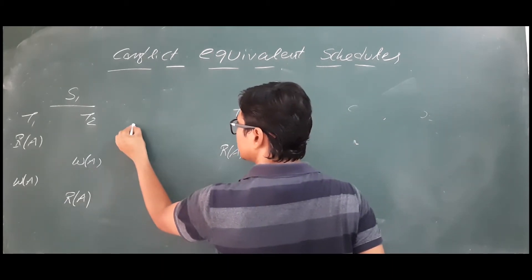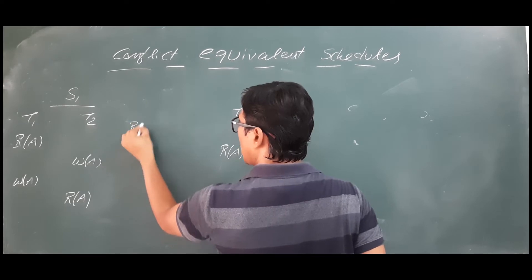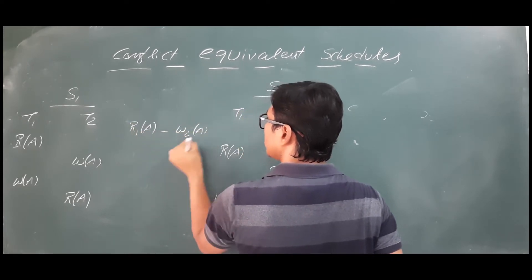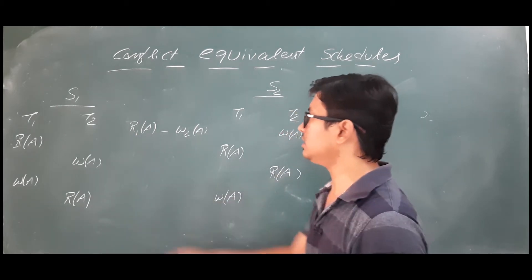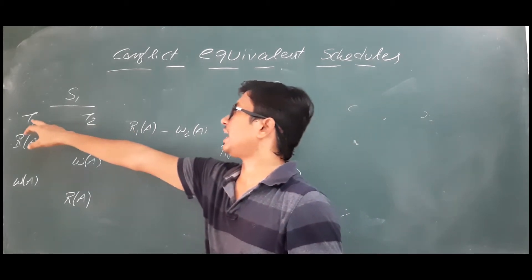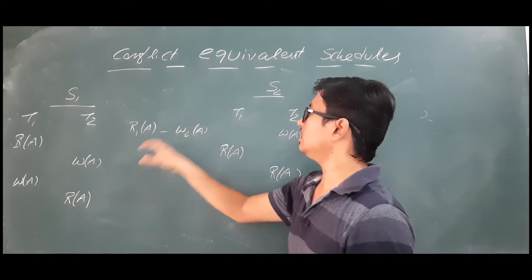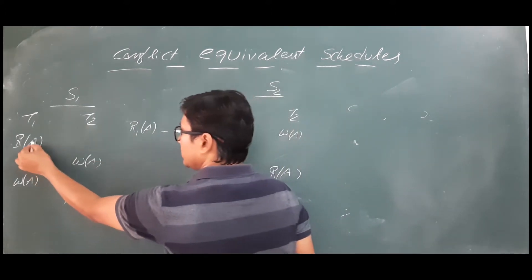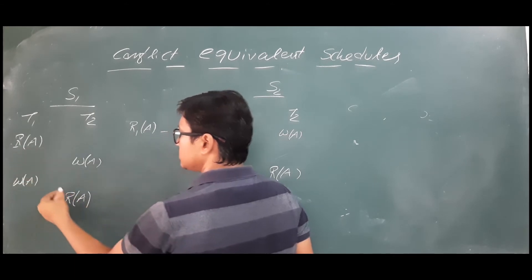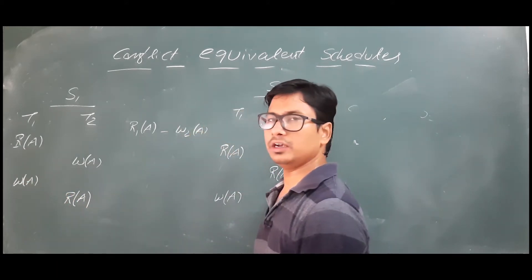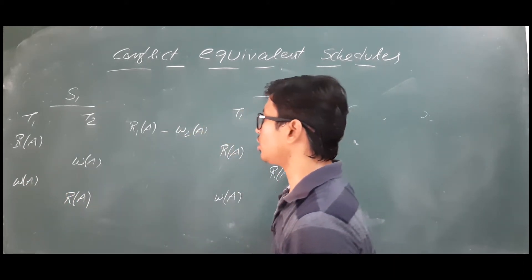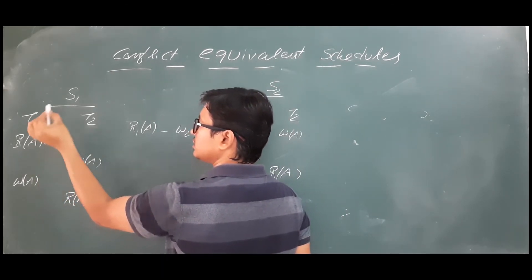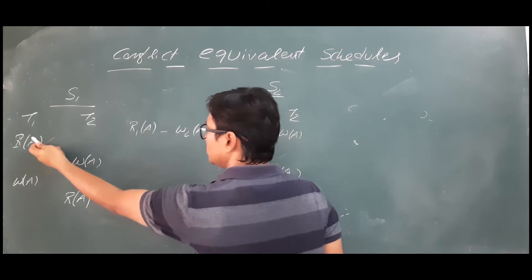Now Read A and Write A — is it a conflict? Yes, it is a conflict. So what is the conflict? It is R1(A) to W2(A), meaning read from transaction T1 and write from transaction T2 on data item A. Then Read A and Read A — is it a conflict? No, read-read on the same data item is not a conflict.